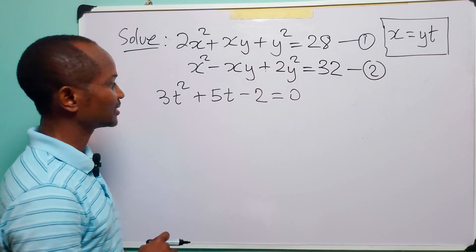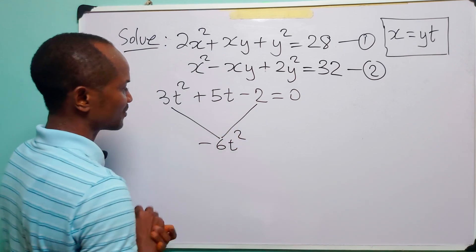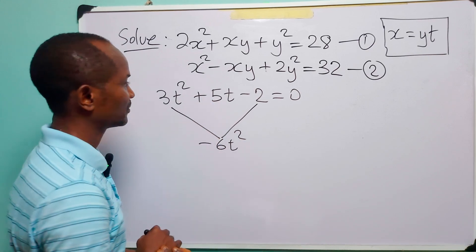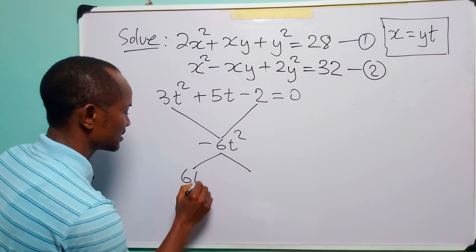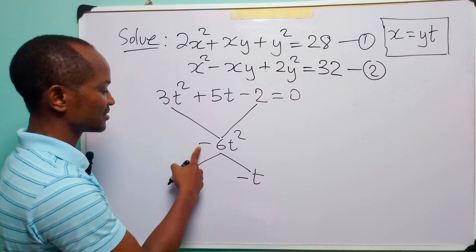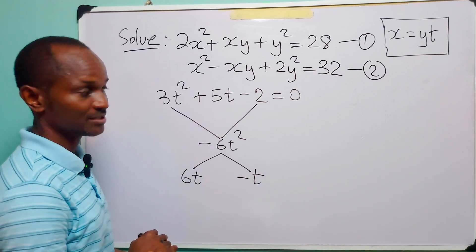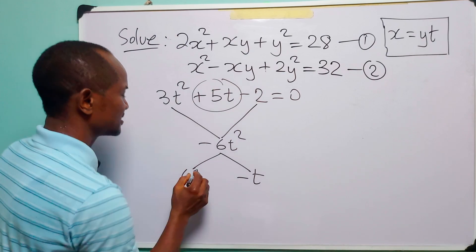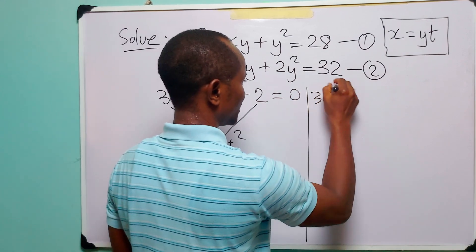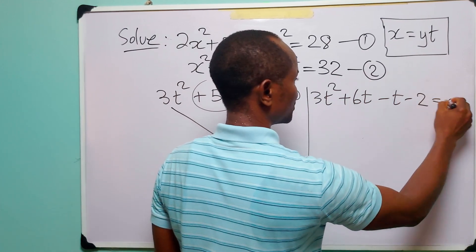We can factorize this quadratic equation. To do that, we multiply the first term by the last term to get minus 6t². We ask what factors of minus 6t² add up to plus 5t — they are 6t and minus t, because 6t times minus t is minus 6t² and 6t plus (minus t) is plus 5t. Replacing the middle term with these two factors, we have 3t² + 6t - t - 2 = 0.